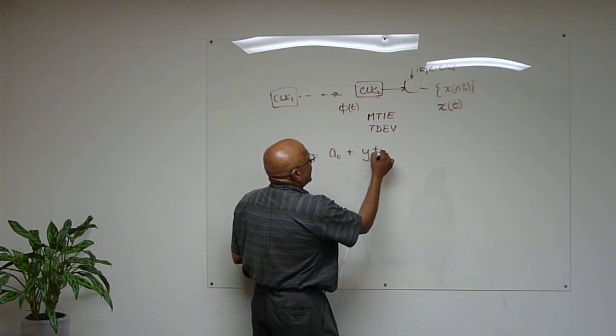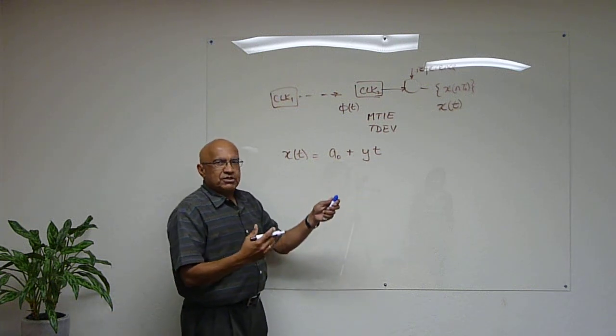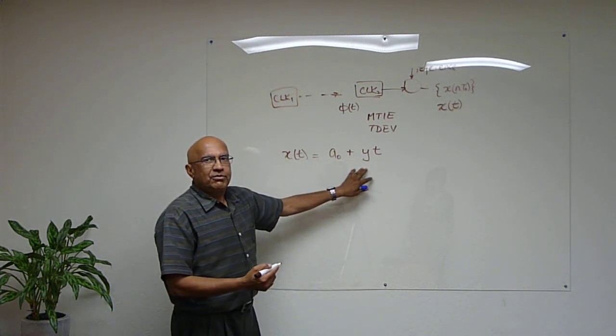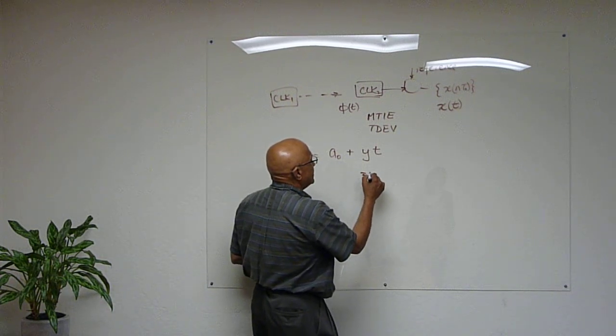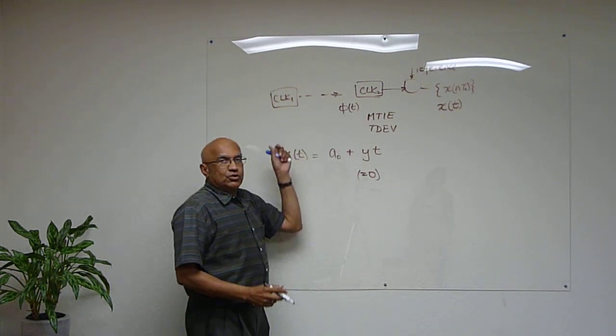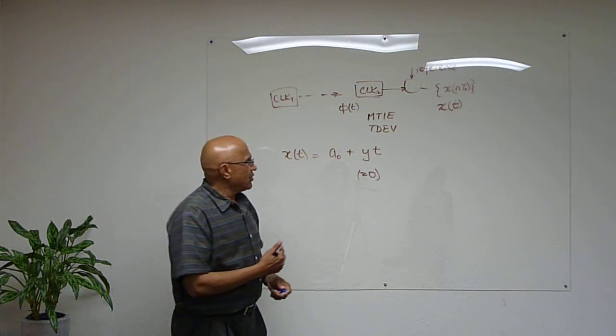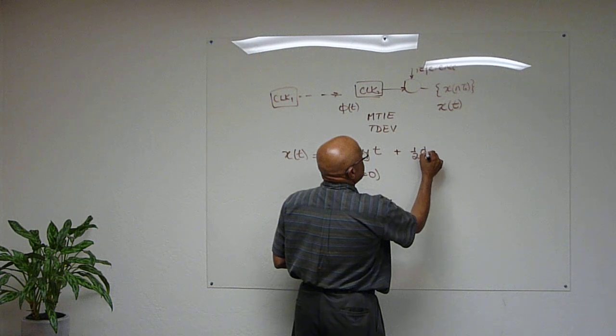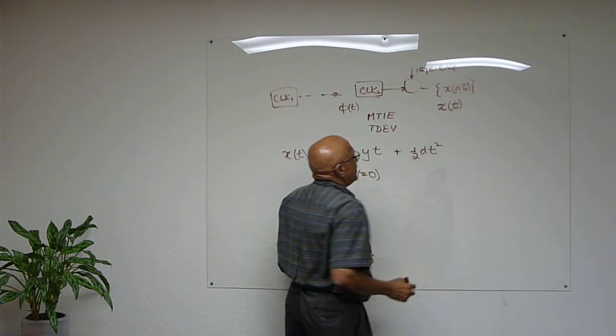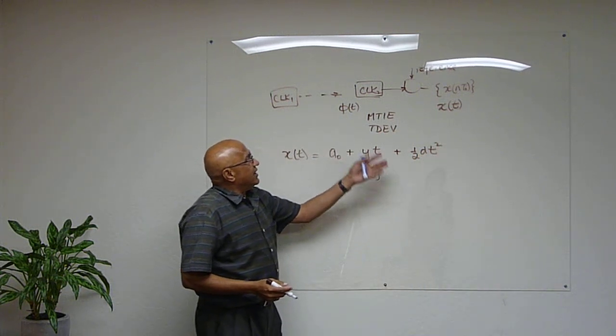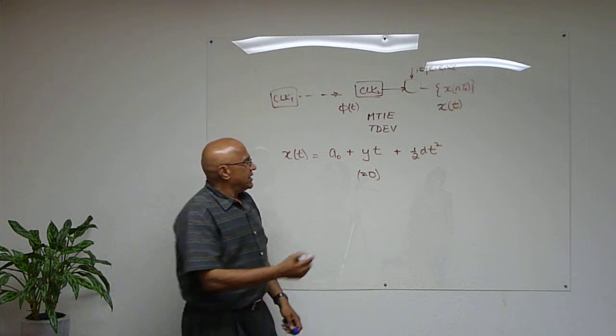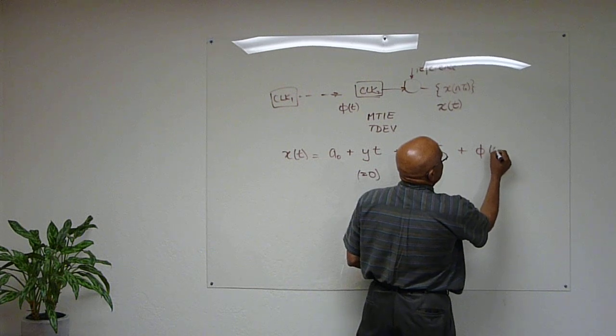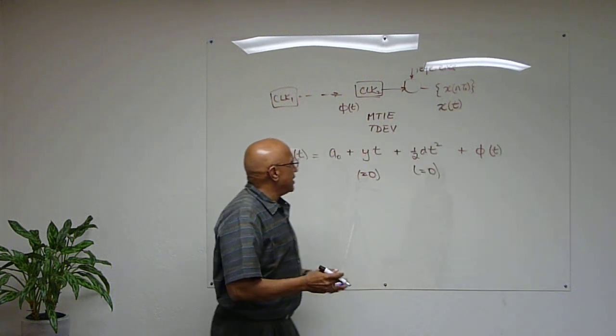Then there is a quantity y which we refer to as the fractional frequency offset. Ideally we want this to be zero. Why? Because we expect the two to be locked, so they should have the same frequency. There may be some drift component. Again, if the two are locked, we would expect this to be essentially zero. And then you always have some random component associated with it.